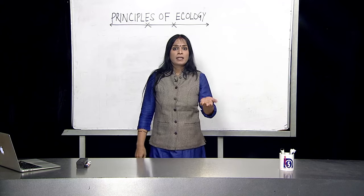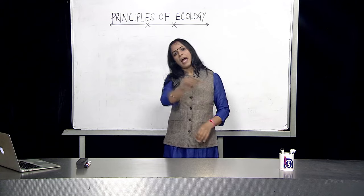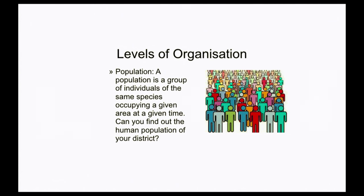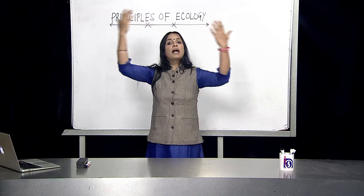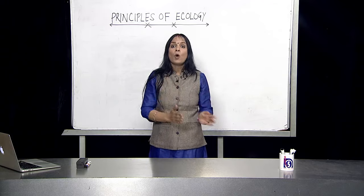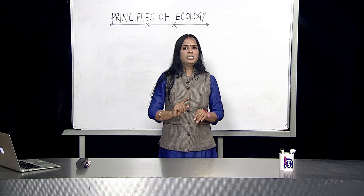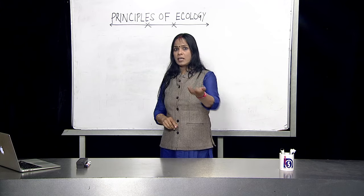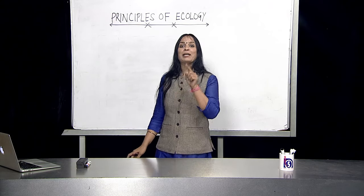Many animals of one species, when they live together at a given time and in a given place, are called a population. The population of tigers in India is different from the population of tigers in Siberia — they are both the same species but living in different locations. If we count all the tigers in this world together, we say the global population of tigers. The location where organisms of a species are found is very important in determining population. Can you try to find out the human population of your own district?